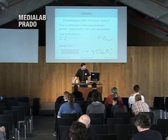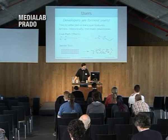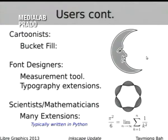Or for example, the tweak tool, where you can take an array of objects and push them around randomly, randomly change their colors. These were things put in because the users wanted it, and the users were the developers. Cartoonists added the bucket fill. There's some font designing in Inkscape, and it's used a lot for diagrams for scientists and mathematicians. There are many extensions to make nice figures or to embed equations into figures.